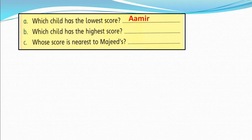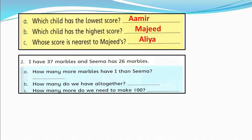Which child has the highest score? Majid has the highest score. Whose score is nearest to Majid's? Aaliyah. Now here is question number 2: I have 37 marbles and Sima has 26 marbles. How many more marbles have I than Sima? Let's find out: 7 minus 6 equals 1 and 3 minus 2 equals 1. So I have 11 more marbles than Sima.